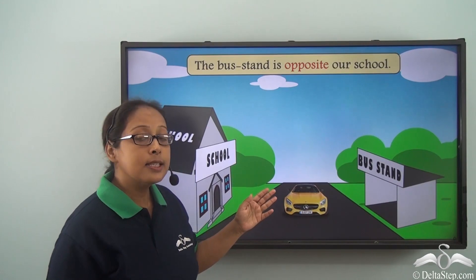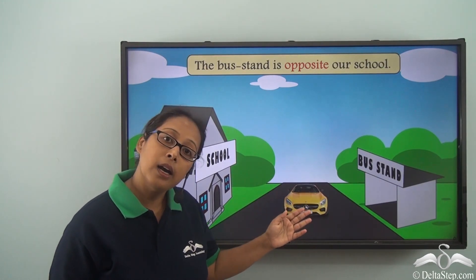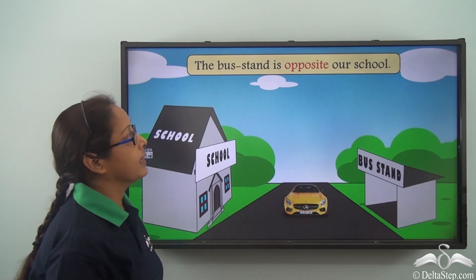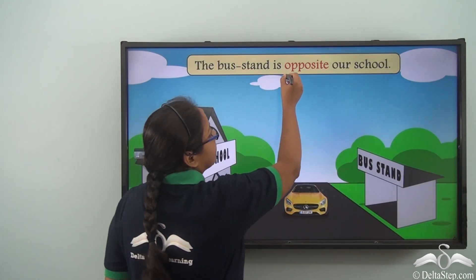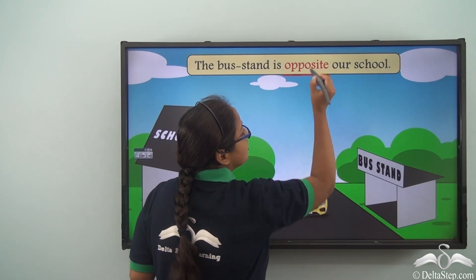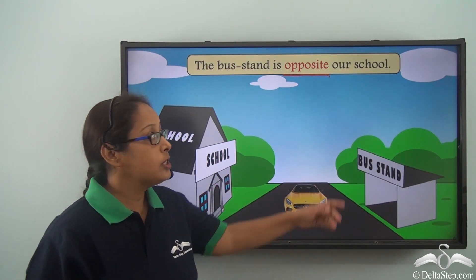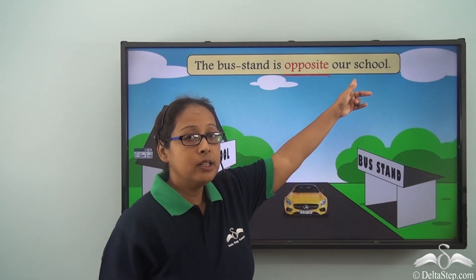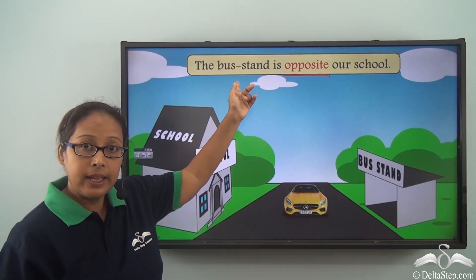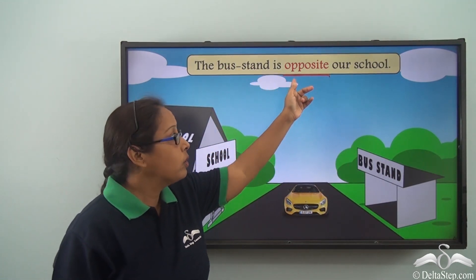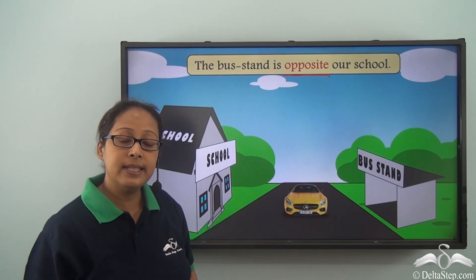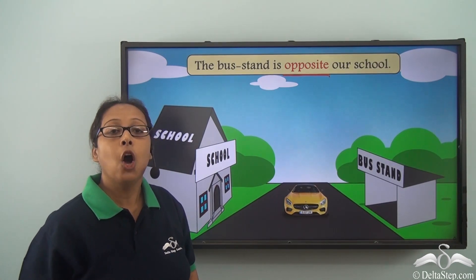The bastan is opposite our school. We can see that this word is showing the relation between the school and the bastan. Therefore, this is the preposition in the sentence: opposite.